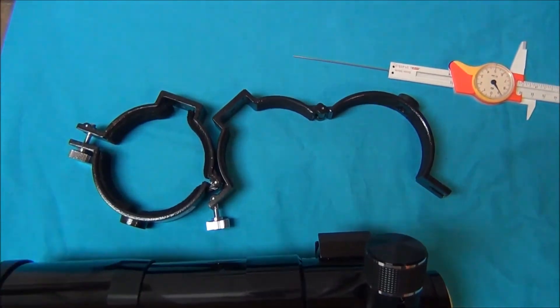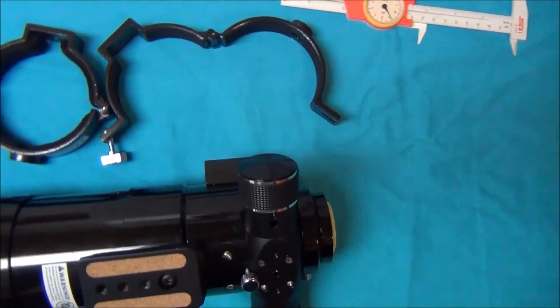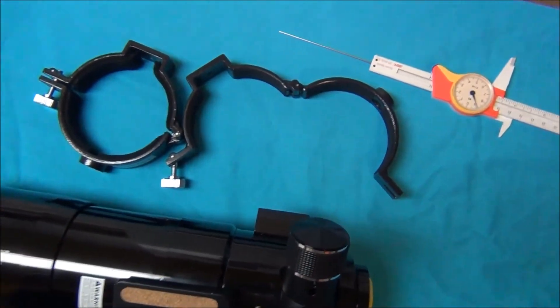Get a couple of the 90 millimeter scope rings, the solid scope rings, and put those on to hold your scope firmly. And by the way, when you get these 90 millimeter rings, get a bar that these will mount to.